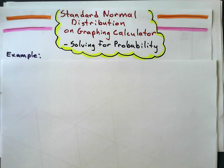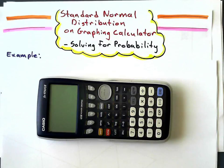In this video I'm going to show you how to solve for probability with standard normal distribution on the graphing calculator. The calculator I'm talking about is the Casio FX-9750 G2, so I'll be using this one to demonstrate.